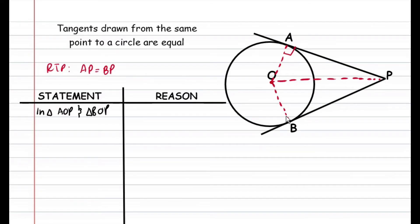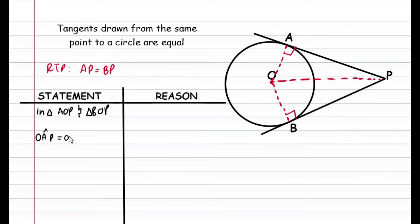If we also look at the line OB, that's also a radius intersecting this tangent at the point of contact between the tangent and the circle, so it's also perpendicular to this tangent. Because of that, the angle OBP is also equal to 90 degrees. So we can state that in both triangles, angle OAP is equal to angle OBP because they're both equal to 90 degrees. Our reason: radius perpendicular to tangent.